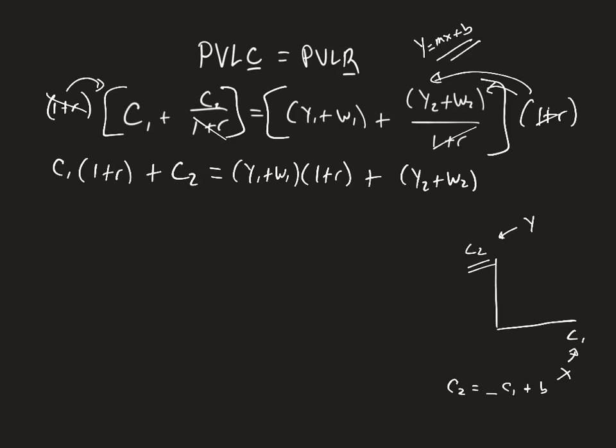Next, what we want to do is we want to make sure that we are solving for c2. That's going to be our y variable. So we're just going to have to subtract c1 times 1 plus r from both sides.